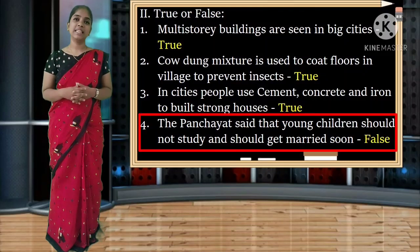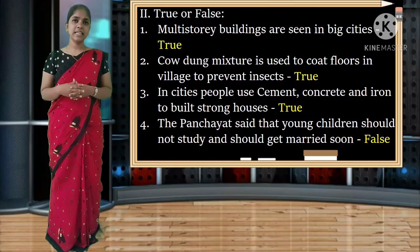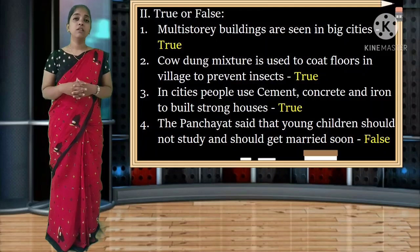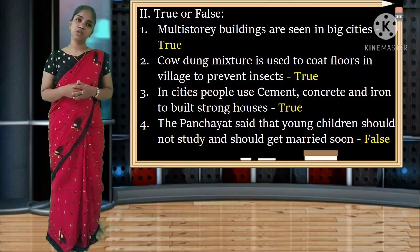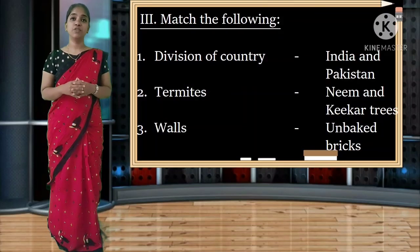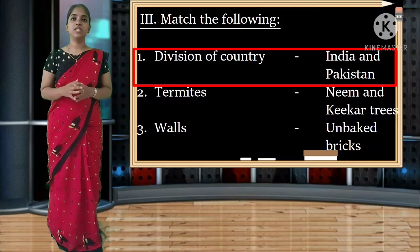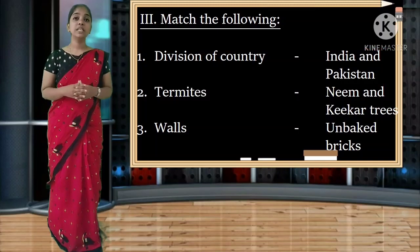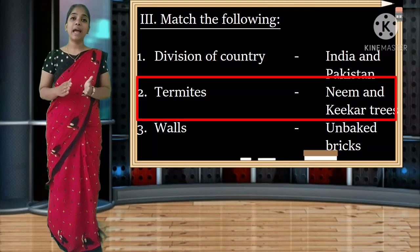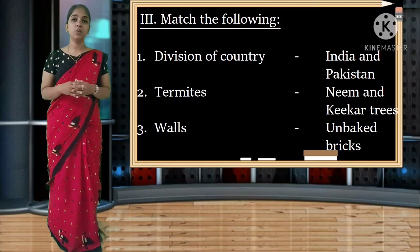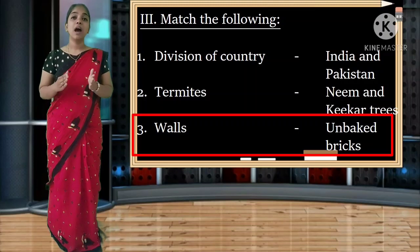Fourth: the panchayat said that young children should not study and should get married soon - it is a false statement. Children were allowed to study. Match the following: division of country - India and Pakistan. Termites - neem and heekar trees. Walls - unbaked bricks.